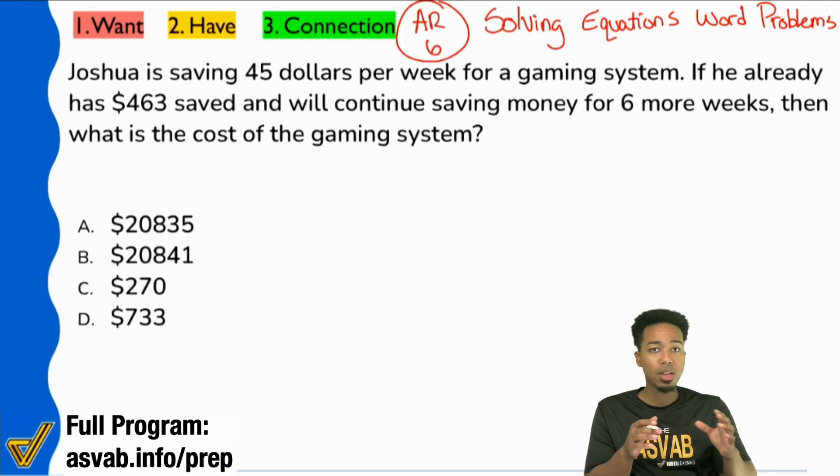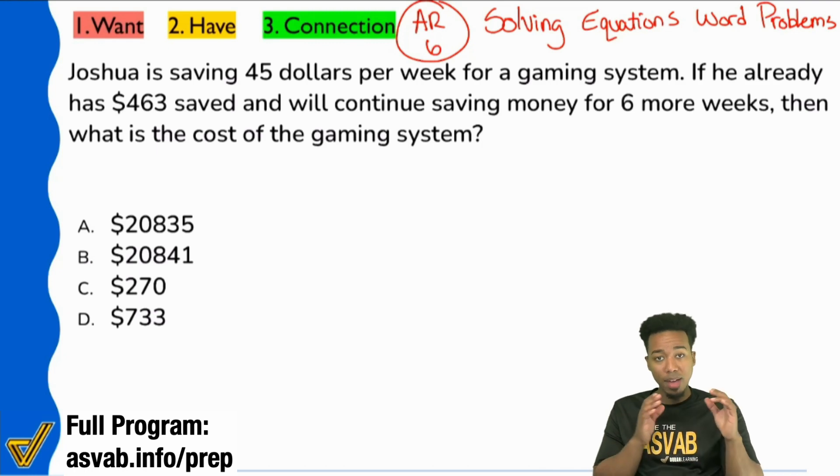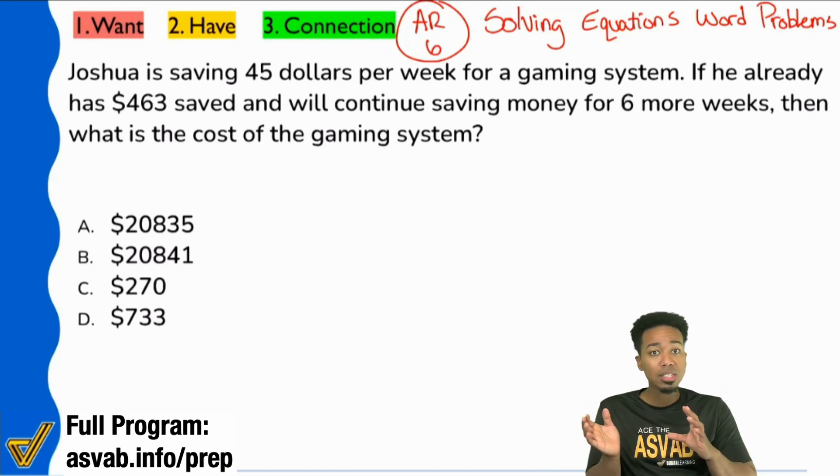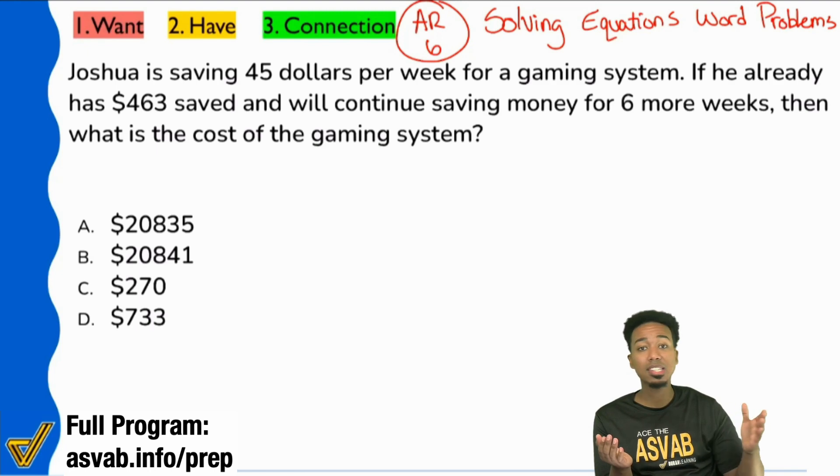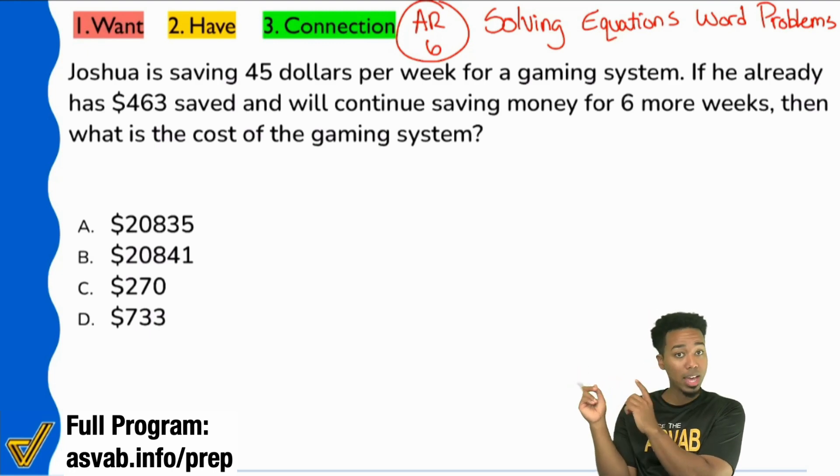Plenty of topics on the ASVAB can be solved by using a linear equation, but a linear equation basically is this. You have a beginning and you have an end, and you have something that happens consistently in between. So that's how you can tell that you're dealing with a linear equation. Y equals mx plus b. That's how you can tell.